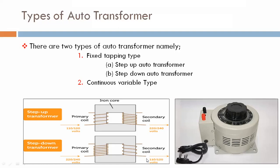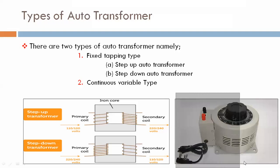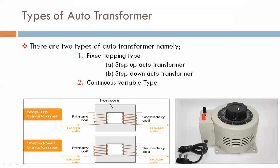Before studying step up auto transformer and step down auto transformer, we know about the conventional transformer — step up and step down types. This is a continuous variable type auto transformer; this is the pictorial view of that. Now we are studying in the next slide about auto transformer.